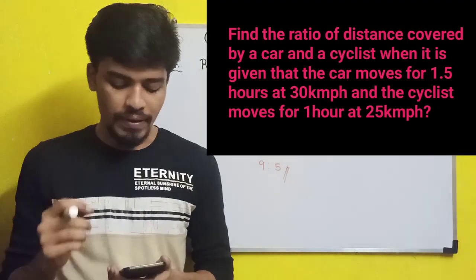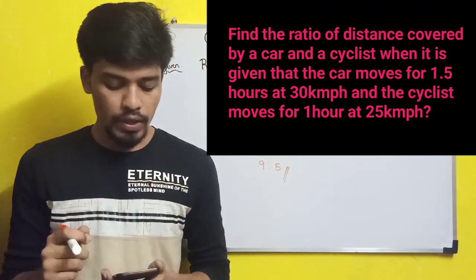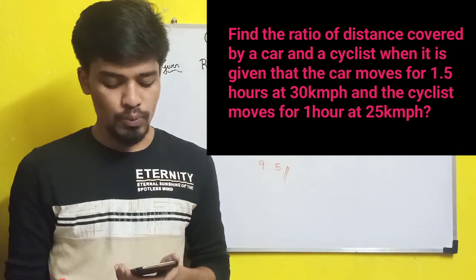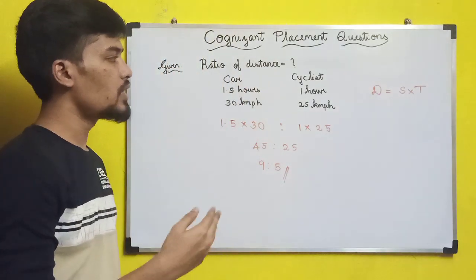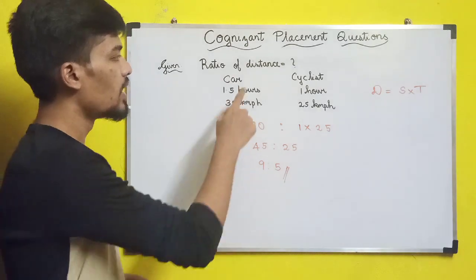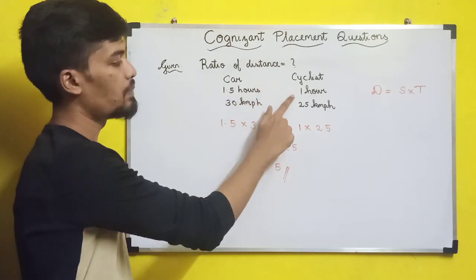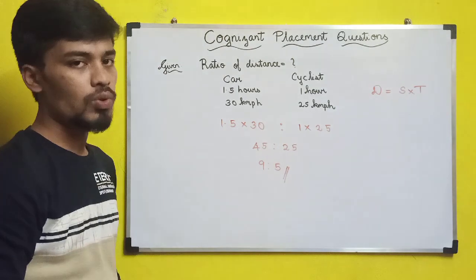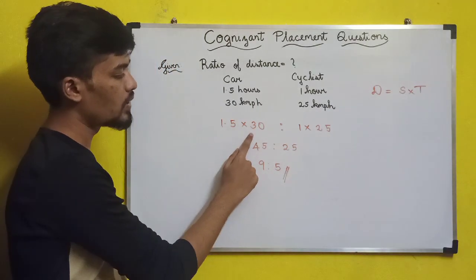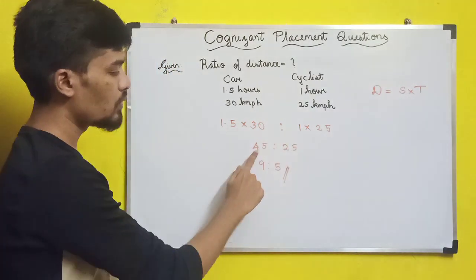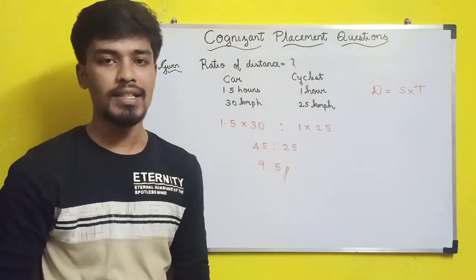Next question: find the ratio of distance covered by a car and a cyclist, given that the car moves for 1.5 hours at 30 km/h and the cyclist moves for 1 hour at 25 km/h. Using distance = speed × time: car distance = 1.5 × 30 = 45, cyclist distance = 1 × 25 = 25. Ratio = 45:25, simplified by 5, gives 9:5.